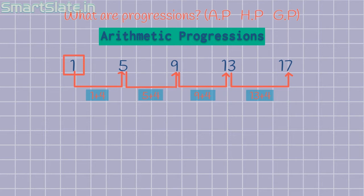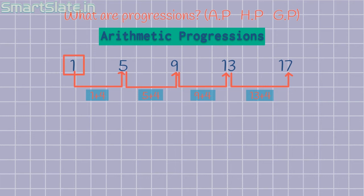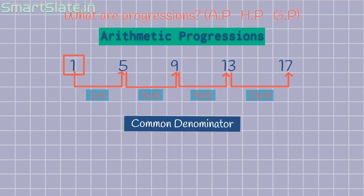What we see here is consecutive numbers are obtained by adding some common number to the previous number. That is, this is a series of numbers where the next consecutive number increases or progresses by a certain value. Such a progressive series of numbers is called as arithmetic progression. The common number with which each term progresses in the series is called as common denominator, or simply CD.